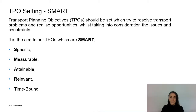An important part of the OBC process is to define our transport planning objectives. As I've mentioned in the main presentation, these TPOs are specific to each business case and are created to essentially flip the problems that we've identified on their heads, and to ensure that the options we develop can be assessed against their ability to meet each TPO.